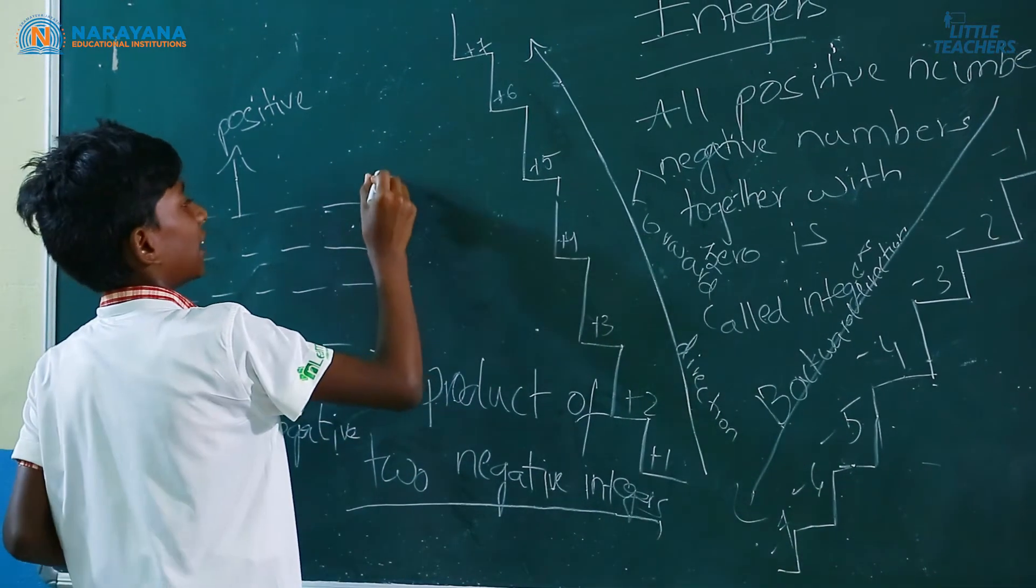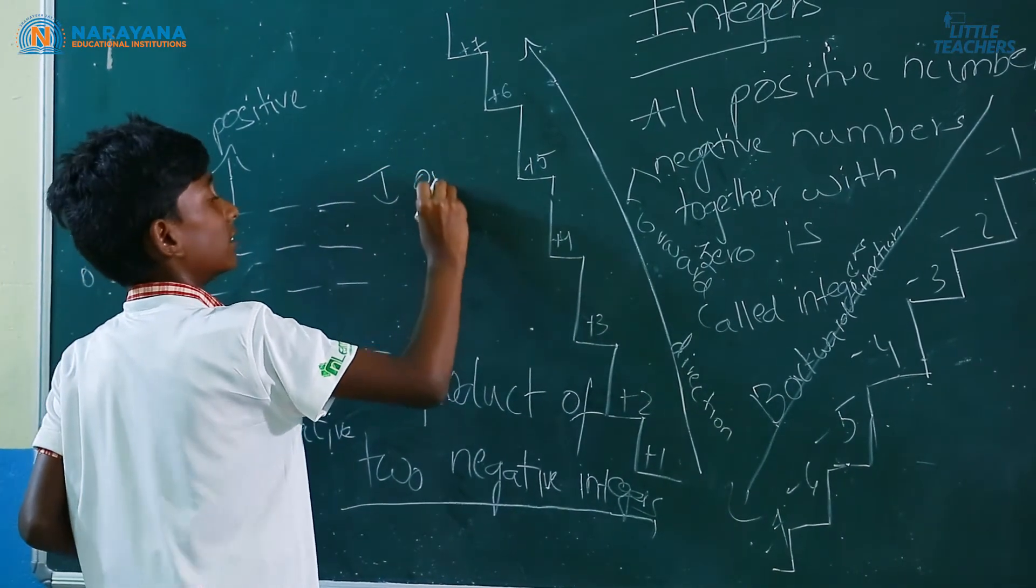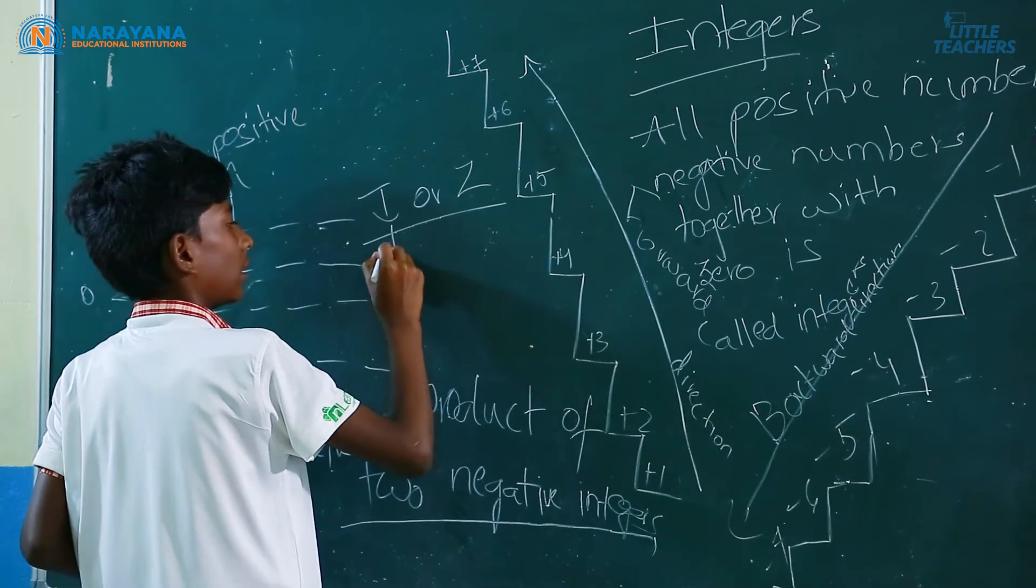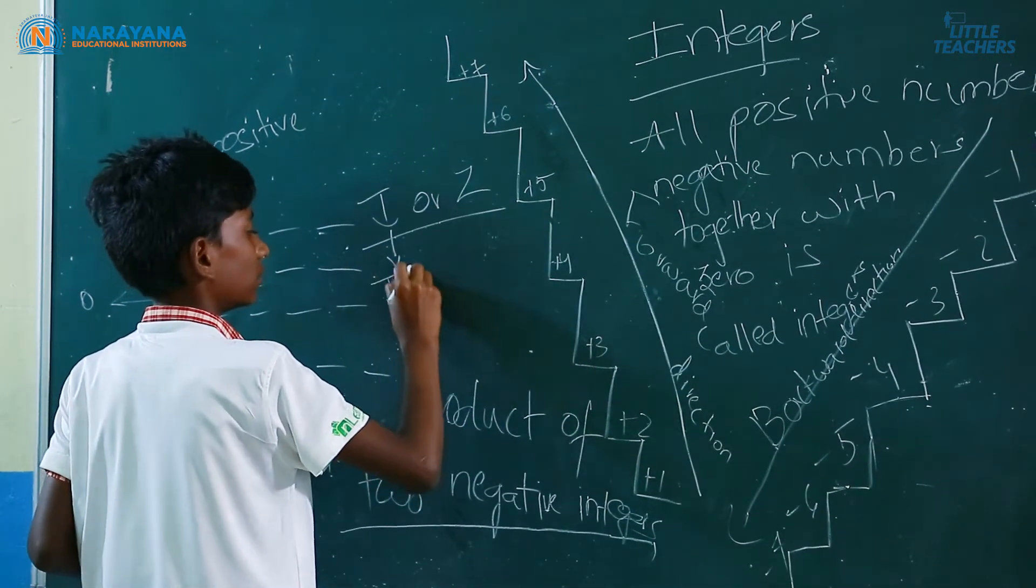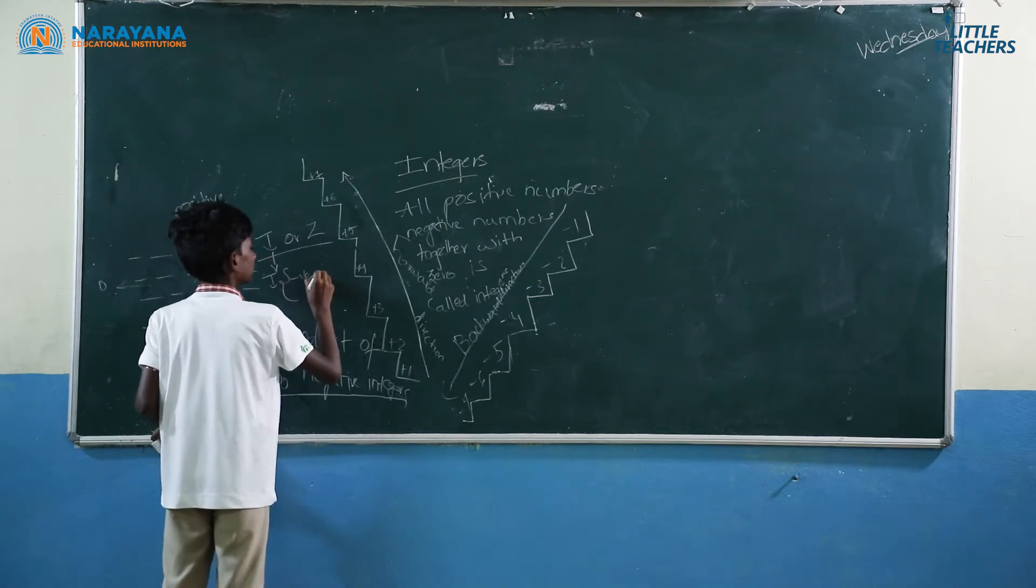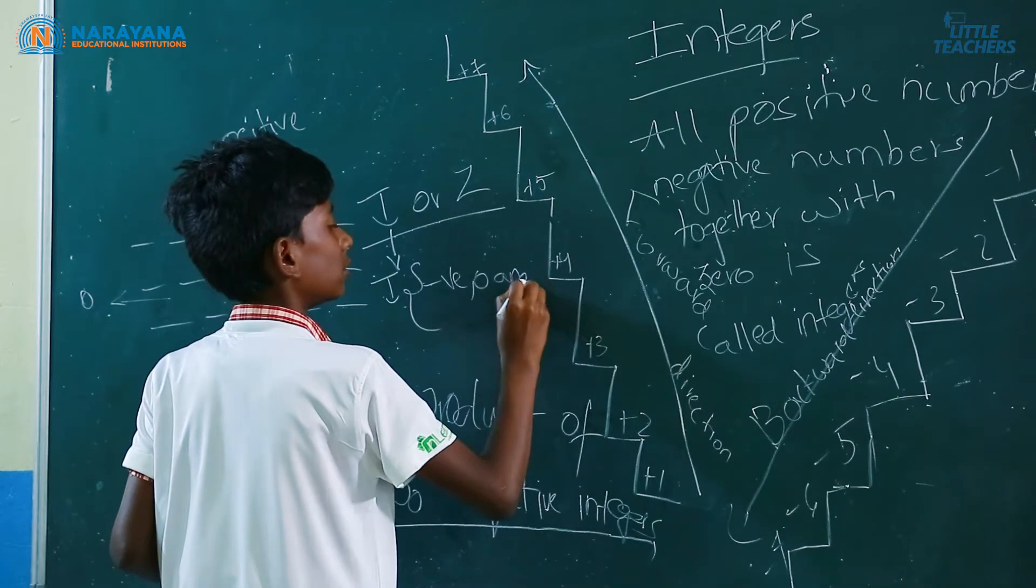Integers can be denoted as letter i or z. i equals negative, 0, and positive.